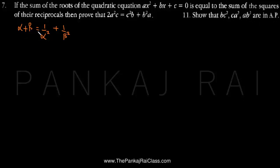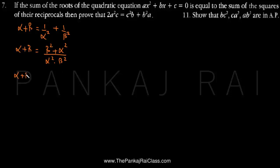We have been given that alpha plus beta is equal to 1/α² + 1/β². Cross-multiplying, alpha plus beta equals (β² + α²) divided by (α²·β²), which can be written as alpha plus beta multiplied by (αβ)² equals α² + β².